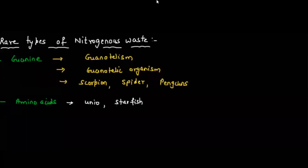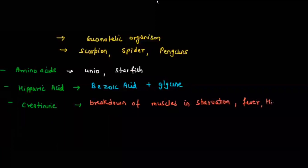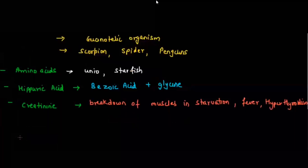Some animals like unio and starfish excrete amino acids as nitrogenous waste. Some animals excrete hippuric acid, which is first broken down into benzoic acid and glycine. Creatinine is also a rare nitrogenous waste, formed due to breakdown of muscles during starvation, fever, or hyperthyroidism — when the thyroid gland becomes overactive.